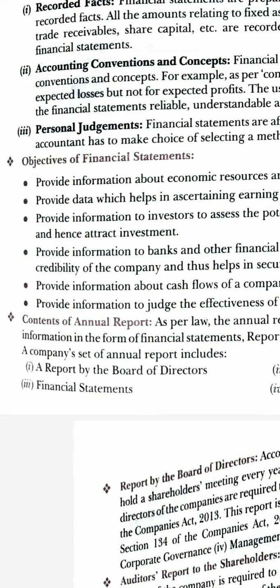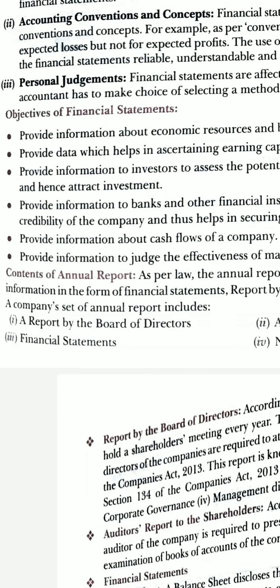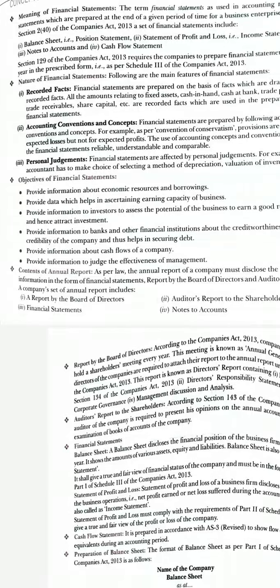A set of an annual report of a company includes: a report by the board of directors containing the report in terms of Section 134 of the Companies Act 2013, then the directors' responsibility statement, report on corporate governance and management discussion and analysis, auditors' report to the shareholders, and under financial statements: balance sheet at the end of the financial year, the statement of profit and loss for the year ended, and cash flow statement.